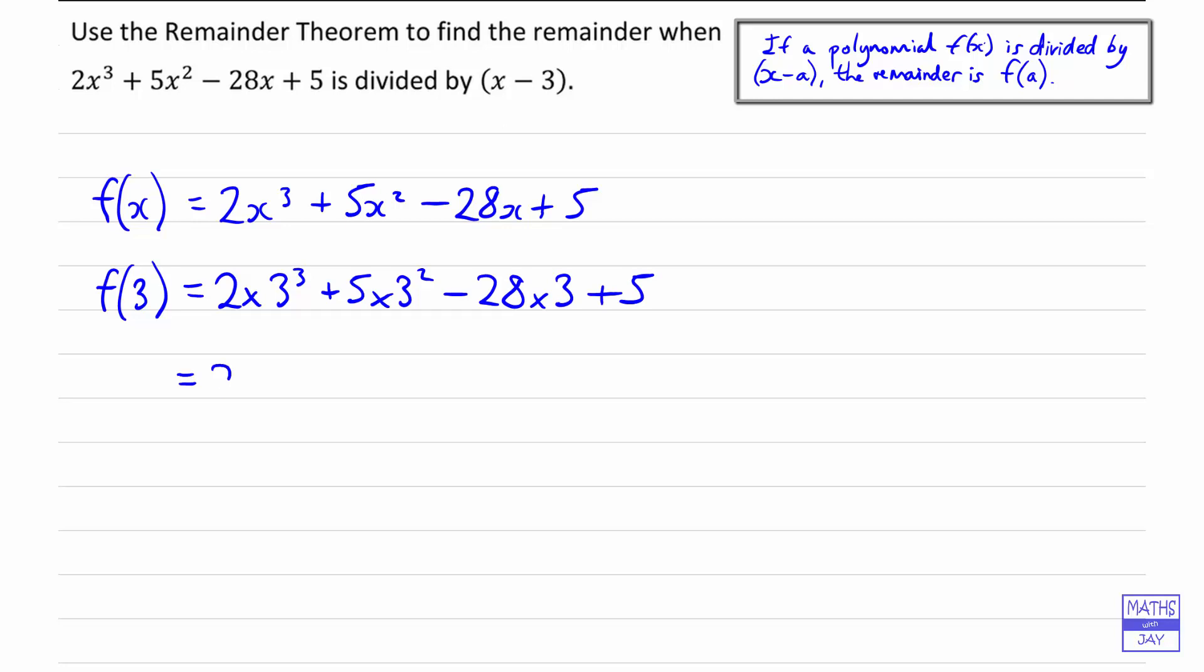And that will work out to be 20. So when we divide the polynomial by x minus 3, we get a remainder of 20.